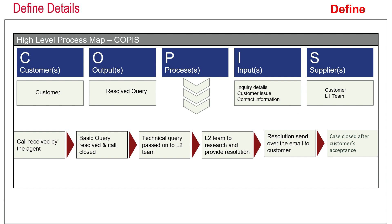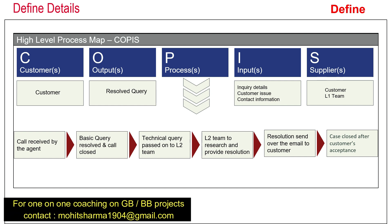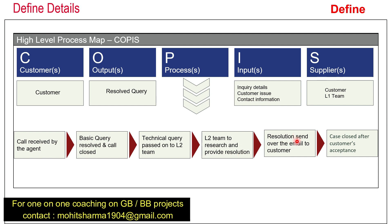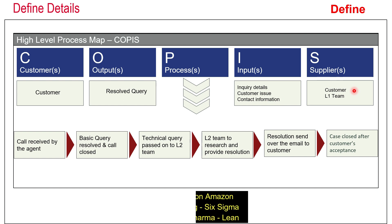The team then created a high-level process map using SIPOC. Since they were a cross-functional team, they wanted to make clear to everyone what process they were trying to improve. The customer in this case is the end customer, and the output is the resolved query. The call is first received by the agent — if it is a basic query, it is resolved there and the call is closed. If not, the technical query is passed to the L2 team, who do research and provide a resolution. An email is then sent to the customer, and once the customer's acceptance is received, the case is closed. The inputs to the process are the inquiry details, customer issue, or contact information. The suppliers of information are the customer as well as the L1 team.